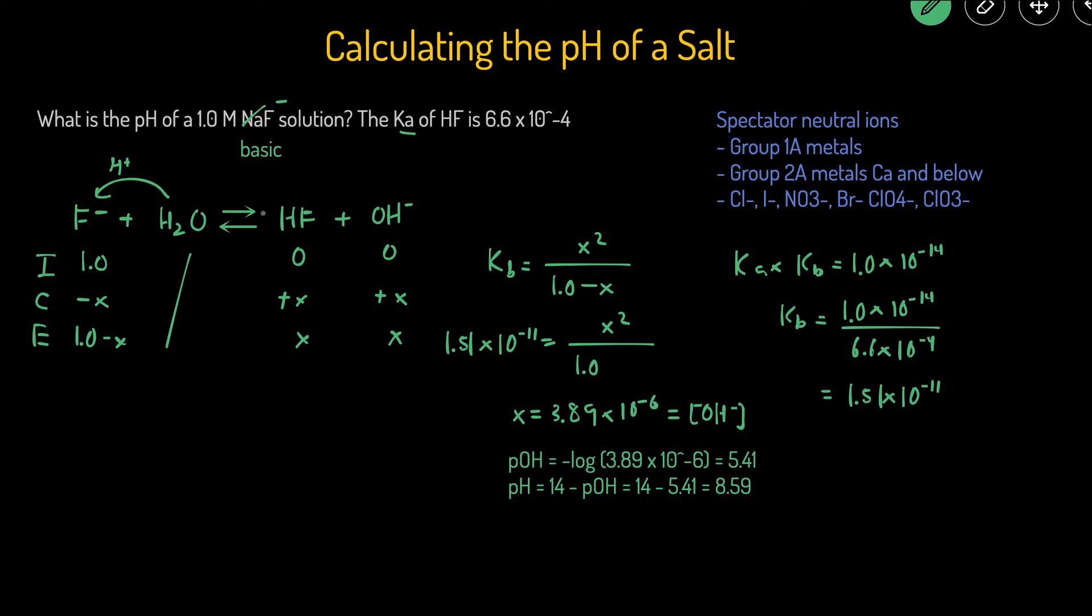The shortcut, as I was mentioning earlier, is just the KB shortcut. You can go straight to setting up KB equals X squared divided by the concentration of the base instead of having to set up the ice table. So we can just skip the ice table and go straight to this.